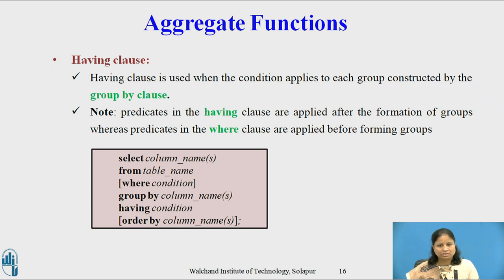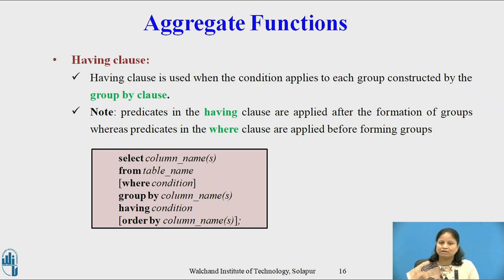Having clause is used when the condition applies to each group constructed by the Group By clause. Predicates in the Having clause are applied after the formation of groups, whereas predicates in the Where clause are applied before forming the groups. The syntax is: SELECT column_name FROM table_name WHERE condition GROUP BY column_names HAVING condition ORDER BY column_name. The Having clause must follow the Group By clause and must precede the Order By clause if used.